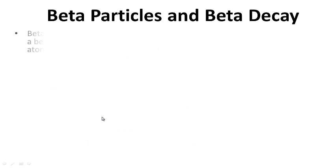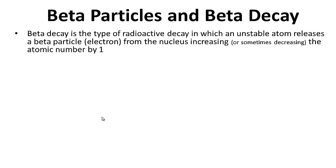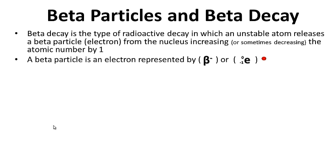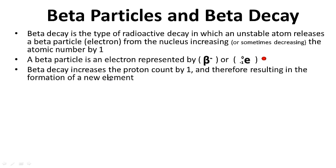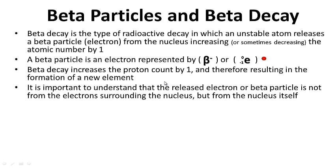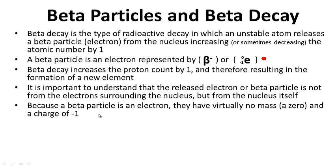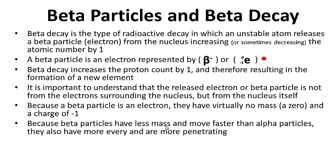Beta particles and beta decay. Beta decay is the type of radioactive decay in which an unstable atom releases a beta particle — which is an electron — from the nucleus, increasing the atomic number by one. A beta particle is an electron represented by the symbol e with superscript 0 and subscript negative 1. Beta decay increases the proton count by one and results in the formation of a new element. The released electron is not from the electrons surrounding the nucleus but from the nucleus itself. Because a beta particle is an electron, it has virtually no mass but does have a charge of minus one. Beta particles have less mass and move faster than alpha particles, giving them more energy and making them more penetrating.